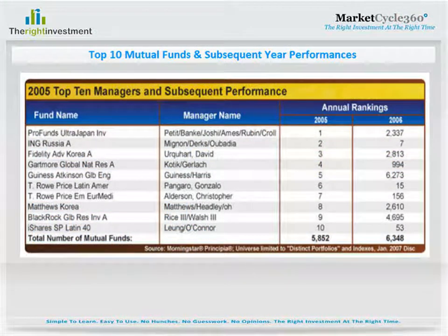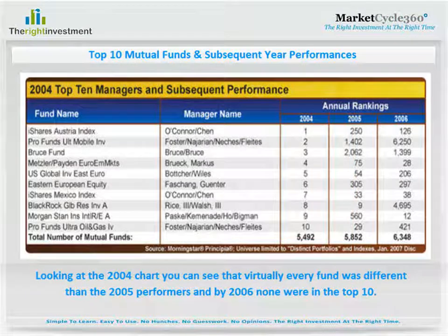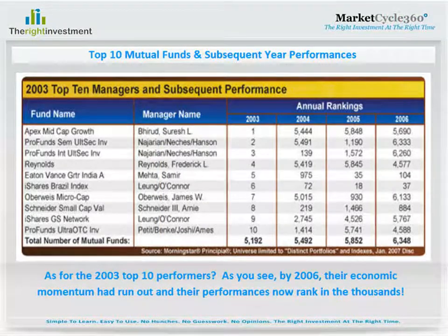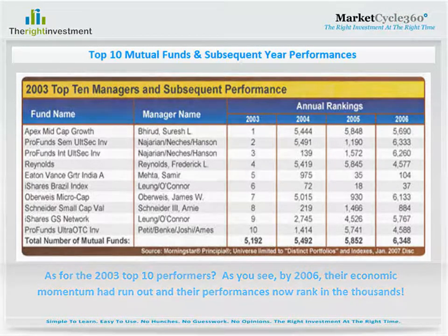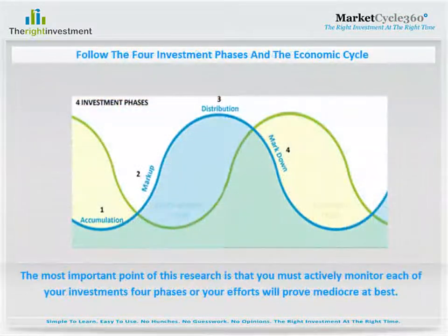We are now going to analyze subsequent year performances of the top ten mutual funds going back to 1999. In the 2005 chart, you will notice that in 2006, just one year later, the top ten money managers of 2005 were already beginning to lose their star status. Looking at the 2004 chart, you can see that virtually every fund was different than the 2005 performers, and by 2006 none were in the top ten. As for the 2003 top ten performers? By 2006, their economic momentum had run out and their performances now rank in the thousands. Skipping back to the top ten performers in 1999, virtually all funds have consistently ranked in the thousands. The most important point of this research is that you or your professional advisor must actively monitor each of your investments' four phases, or your efforts will prove mediocre at best.